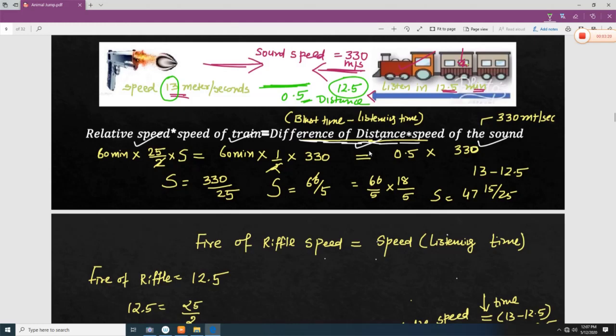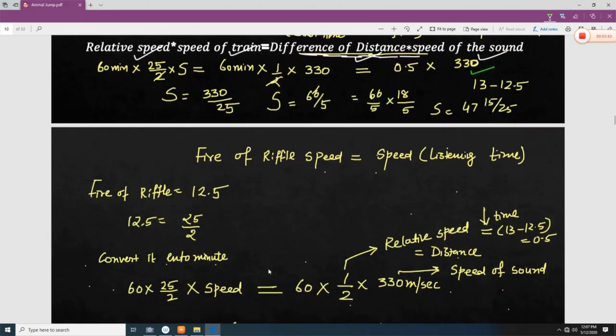And the speed of the sound is 330 which is already given here. And 12.5 is the time that a person is going to listen. So 12.5 means what? 12.5 you can write 25 over 2. So 12.5 you have to convert into minutes.